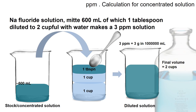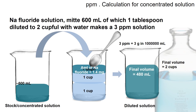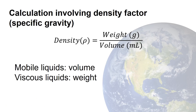To illustrate: the two cups of final diluted solution at 3 ppm contains 1.4 milligrams of sodium fluoride. This 1.4 milligrams comes from one tablespoon added to the water. Since one tablespoon is 15 ml, scaling up to 600 ml of stock solution gives us 56 milligrams total.